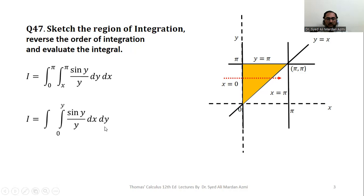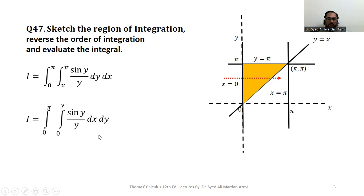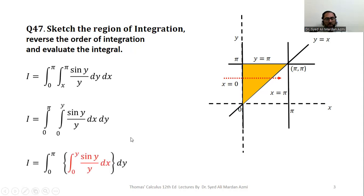For the outer variable y, we check the range of the region along the y-axis. The region starts at the origin and ends at y = π, so the limits of y are 0 to π. After calculating all limits, we have changed the order of integration and set up the new limits. In the next step we evaluate this double integral, always solving the inner integral first.